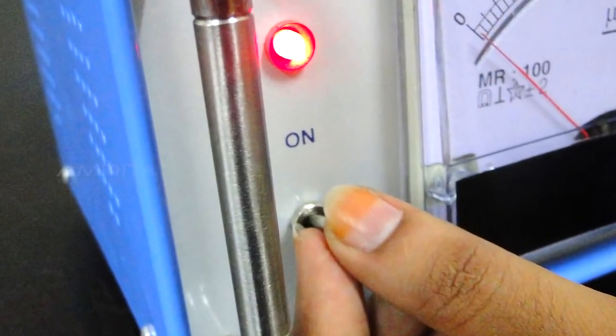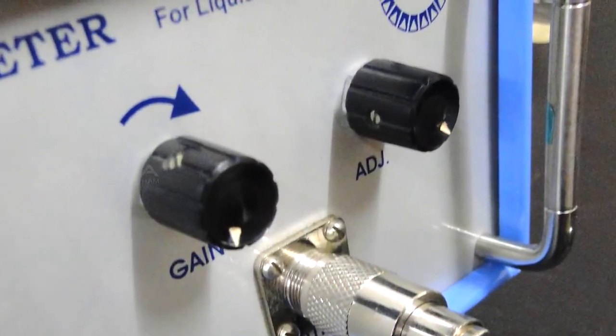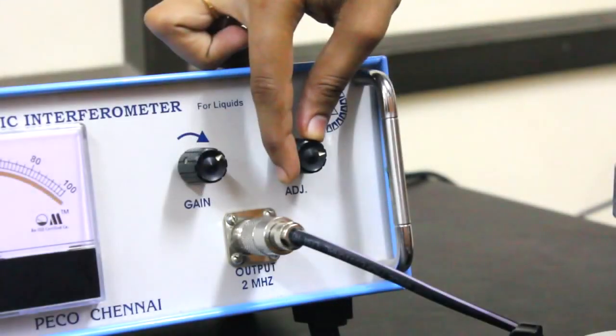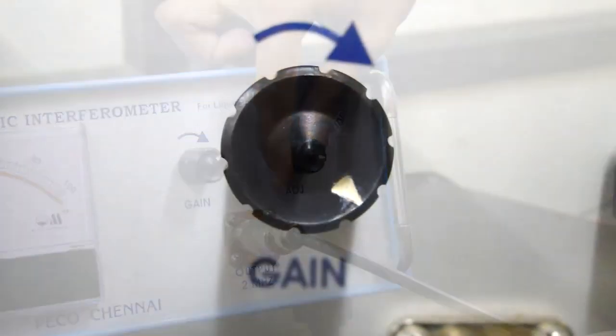There are two knobs on the instrument: adjust and gain. With the adjust knob, the position of the needle on the ammeter is adjusted. The knob gain is used to increase the sensitivity of the instrument.